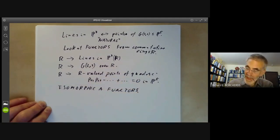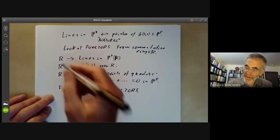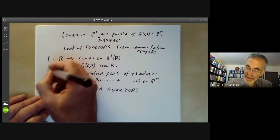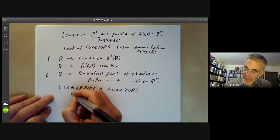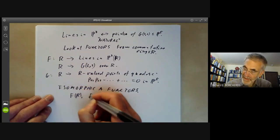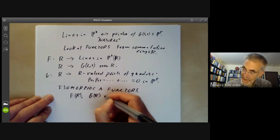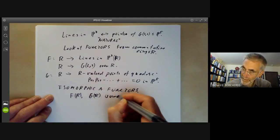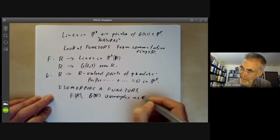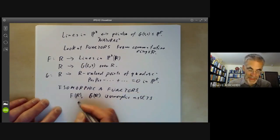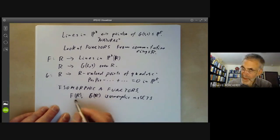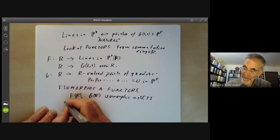So this has the extra condition that if we call these functors F and G, not only are F(R) and G(R) isomorphic as sets, but also these isomorphisms are compatible with morphisms from R to S. So if we've got a homomorphism of rings R to S, the key point is this.